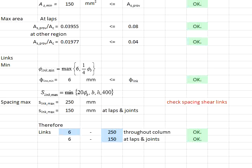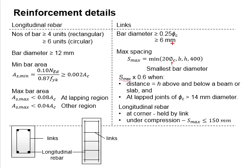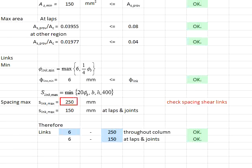It is noted that the spacing for the links near the lapping regions needs to be multiplied by 0.6. Multiplying 250 by 0.6 gives 150 mm. With that, provide the links throughout the column as 250 mm spacing, and at the lapping regions 150 mm spacing.